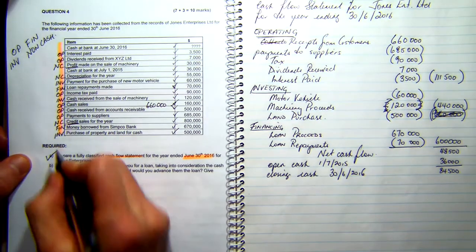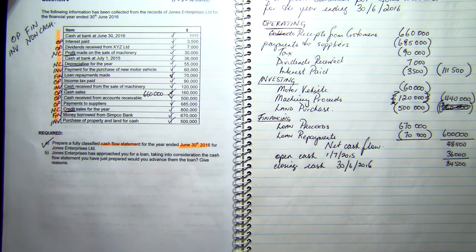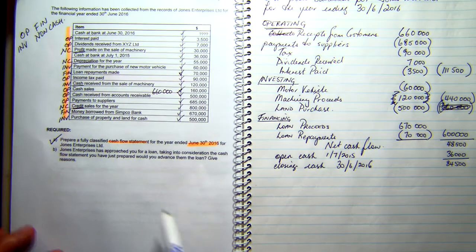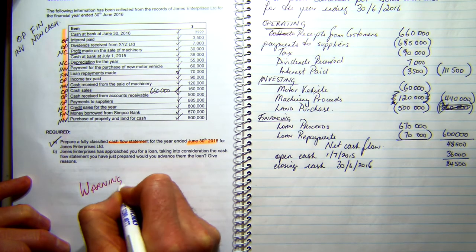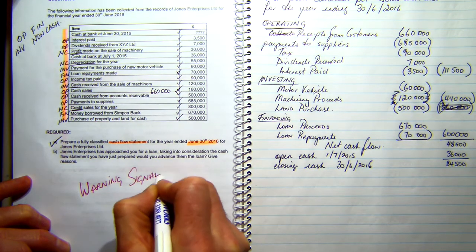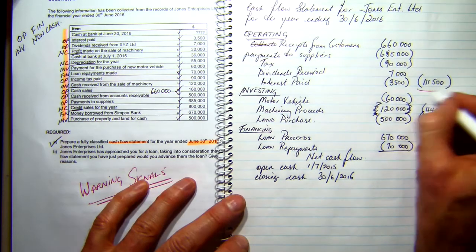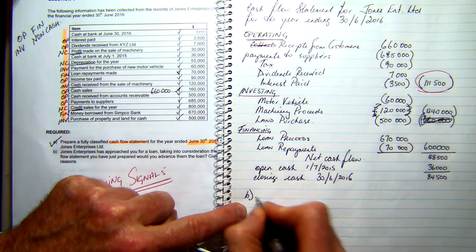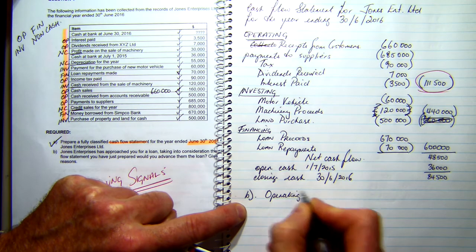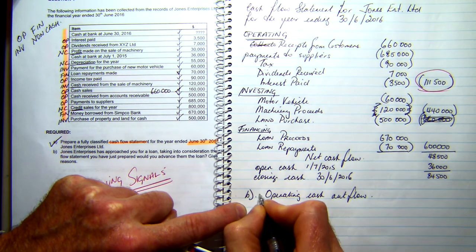That takes care of part A — the cash flow statement is prepared. Now part B: Jones Enterprises has approached you for a loan. Taking into consideration the cash flow statement just prepared, would you advance them a loan? Give reasons. What we're looking for are warning signals. The first warning signal is an operating cash outflow.